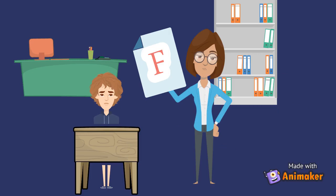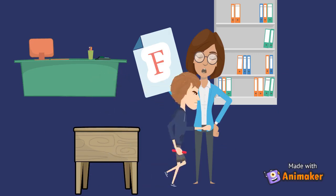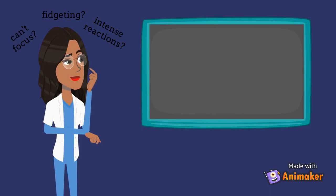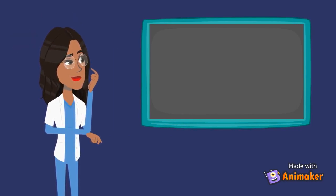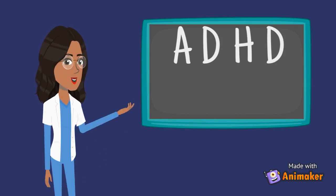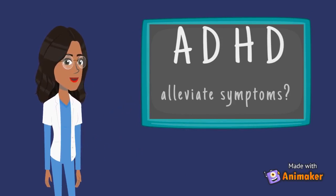Oh, no. It seems like Zach did not do well on his math test today. He seems very upset and angry, but doesn't know how to properly express his feelings. Zach has always had difficulty with school and controlling his emotions. It seems like Zach is facing the challenges that an individual with ADHD would face. Why don't we take a further look into what ADHD is and explore a way to help Zach alleviate his symptoms.